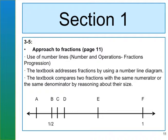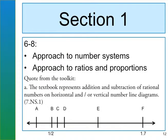We are now moving into standards of mathematical practice and talking about reasonability. As students progress into sixth through eighth grade, it's now an approach to number systems and to ratios and proportions. The textbook represents addition and subtraction of rational numbers on horizontal and/or vertical number line diagrams. Students will need to recognize: how close is one-half to 1.7? Is that a reasonable answer? If not, how would you justify and validate that answer?